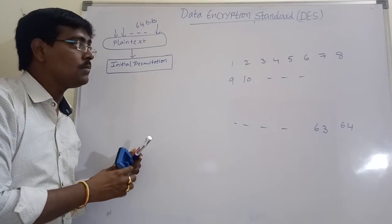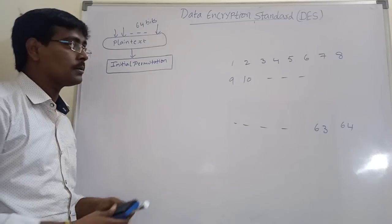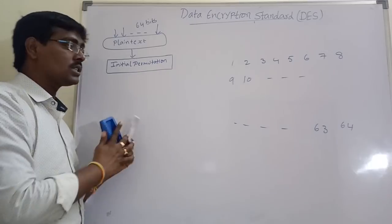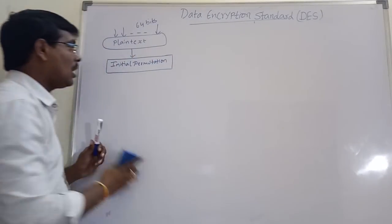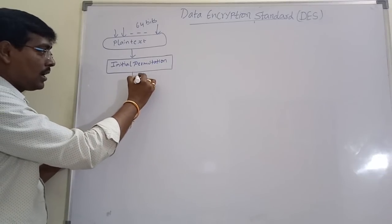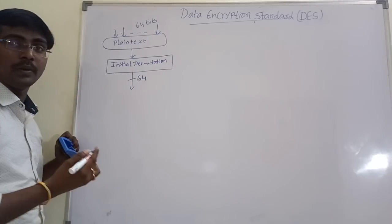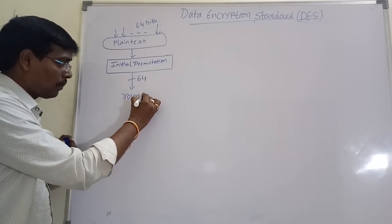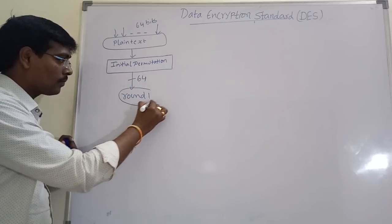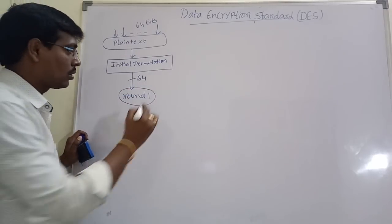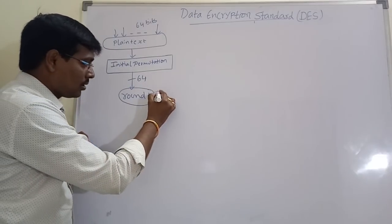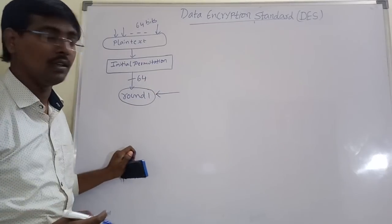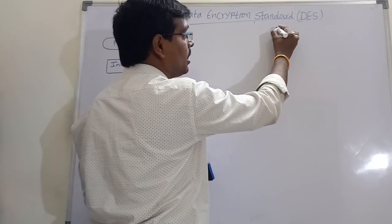Initial permutation means simply transposition of bit positions. After completion of initial permutation, it produces 64 bits. These 64 bits are applied into round 1. To perform some operation, we need plaintext of size 64 and we require a key. So parallelly, we are also generating a key.